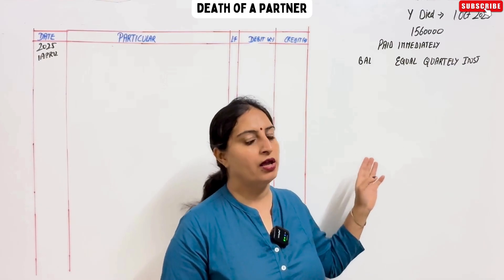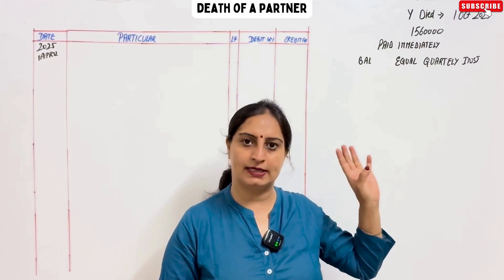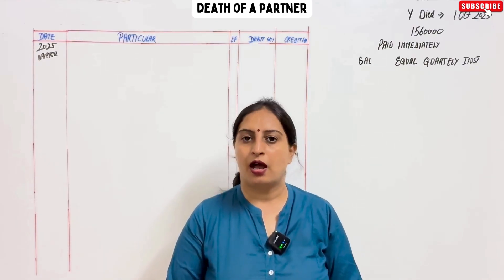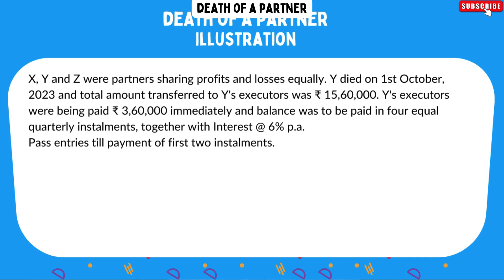This will always come in MCQ or a big question. You can calculate it and easily shift it to a journal entry or account. We will read the question. X, Y and Z are partners sharing profits and losses equally. Y died on 1st October 2023 and the total amount transferred to Y's executor was 15,60,000. The total balance of the deceased partner has to be given to the executor. Y's executor was paid 3,60,000 immediately, and the balance was to be paid in 4 equal quarterly installments together with interest at the rate of 6% per annum.